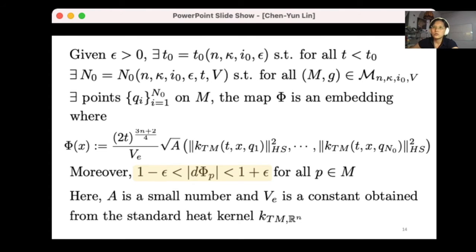Here, the square root of a is a small constant coming from doing a partition of the manifold. And the vₑ is also a constant obtained from the standard Euclidean heat kernel. I'm writing it as k_t^Rⁿ, but actually it doesn't need a notation because we're not using it. I just want to emphasize that it's a heat kernel from the Euclidean space. And the 2t part is 2t to the power of 3n plus 2 over 4. This is to balance the parabolic rescaling.